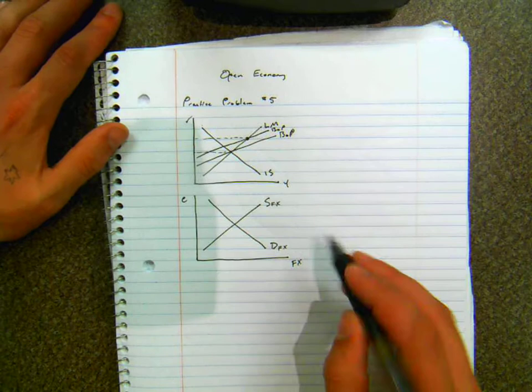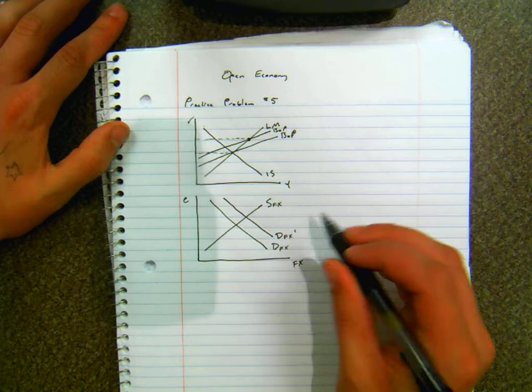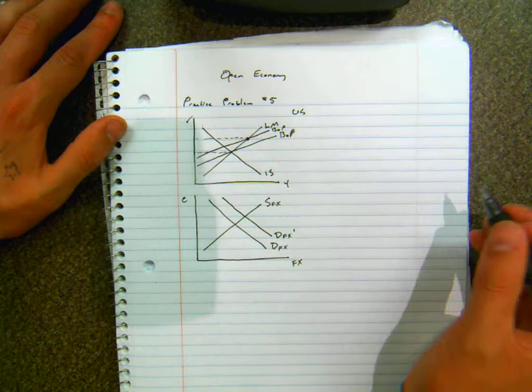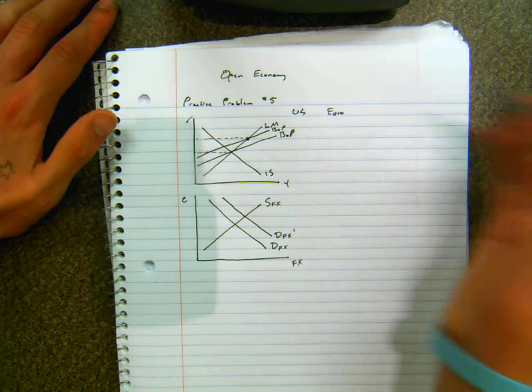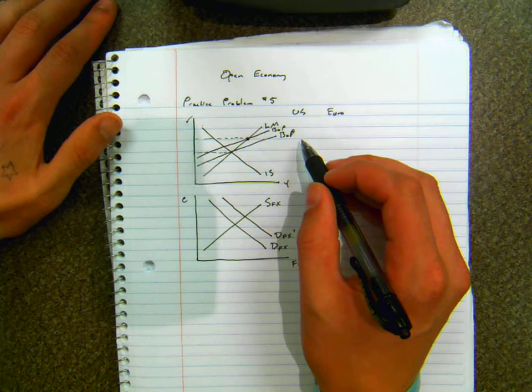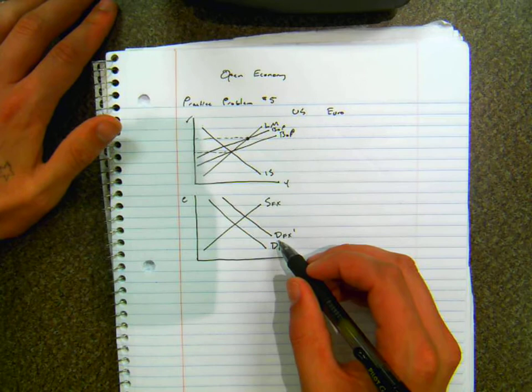So as a result you see an outward shift in demand for foreign exchange. Because say that we're in the United States and where the foreign interest rate increases is the euro. People now need more euros in order to invest in the European economy. So you see an outward shift in demand for these euros.